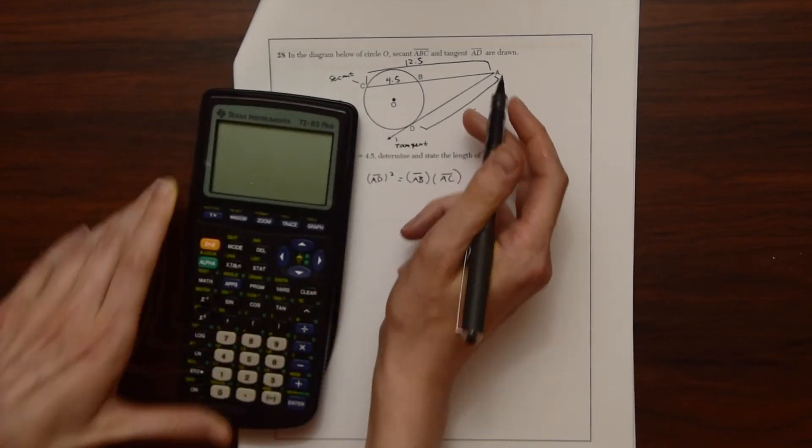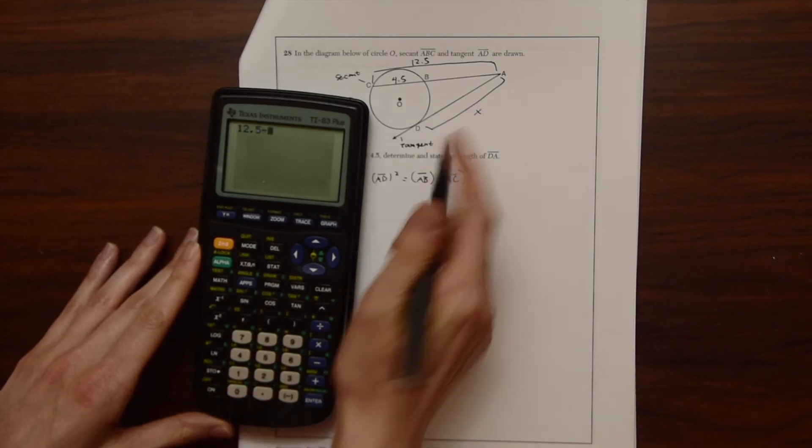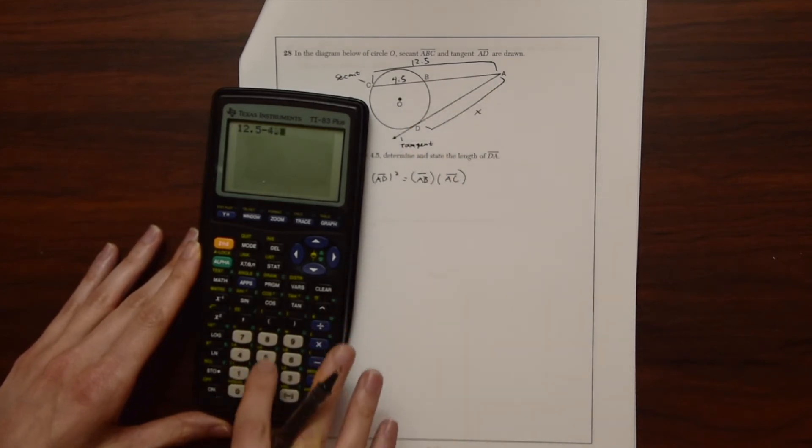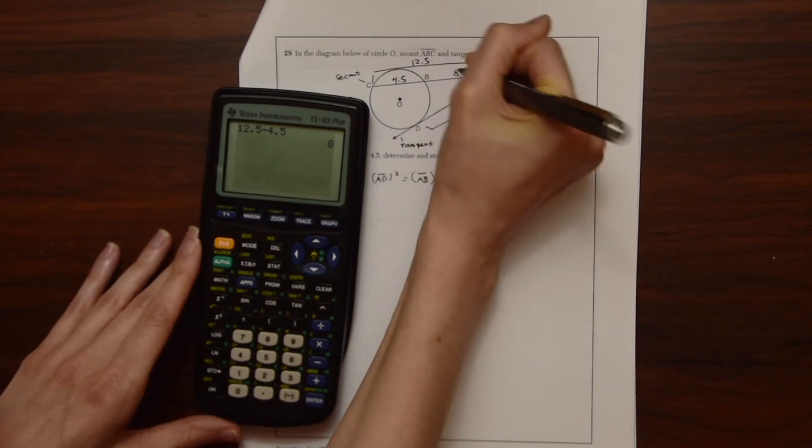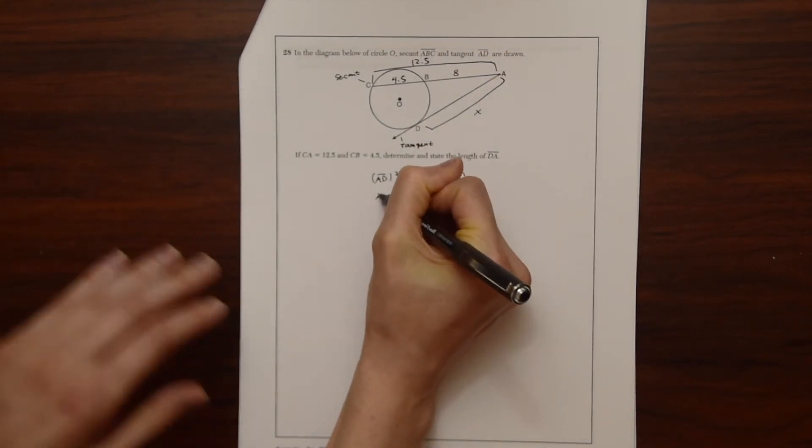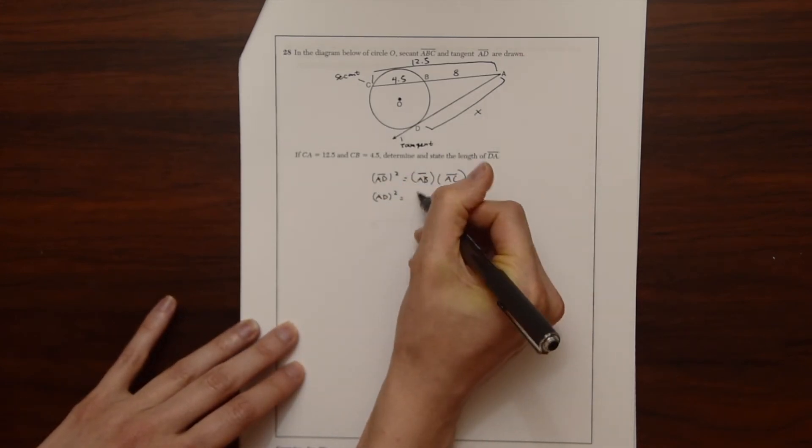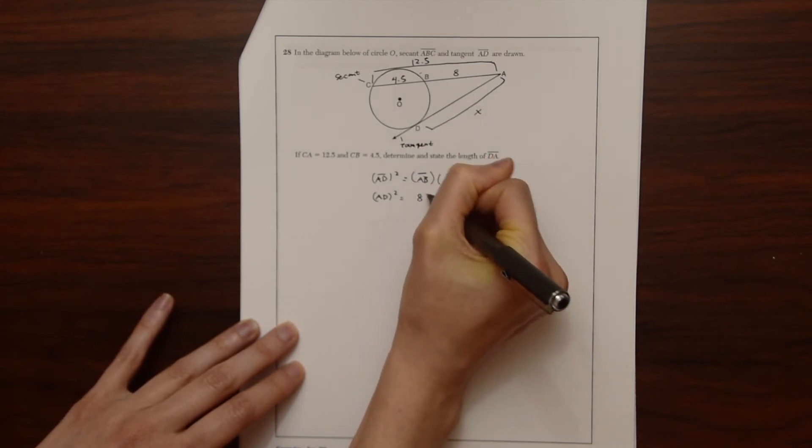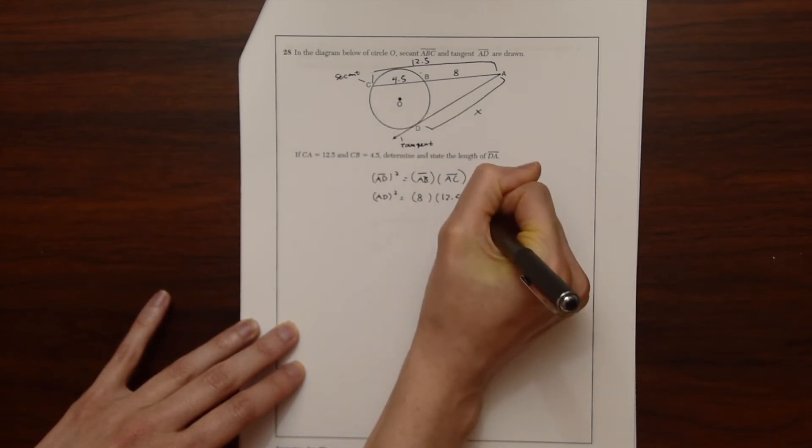So we can do that by just taking 12.5, which is the length of the whole thing, minus 4.5, just the small section over here, BC. So we know that this is equal to 8. So now we can write this: AD squared is equal to AB, 8 times AC, the whole length of that secant, which is 12.5.